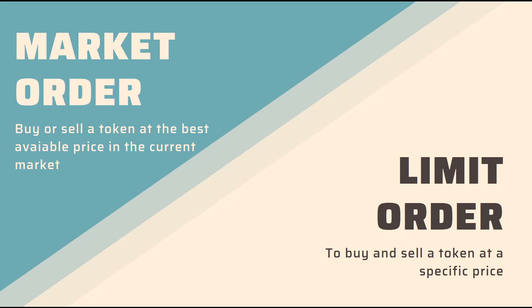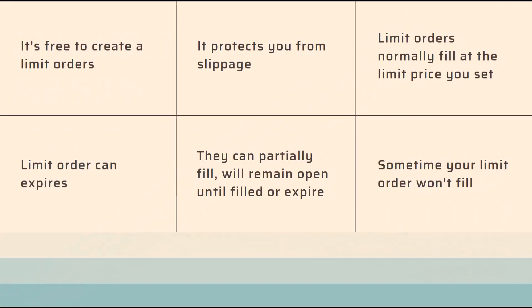With a limit order, you buy and sell a token at a specific price that you set, so if you want to get a deal, this is the way to do it. Some of the benefits: it's free to create a limit order, it protects you from slippage, and they normally fill at the limit price you set. They do expire — you can set them from 10 minutes up to seven days. They can also get partially filled, but your position will remain open until it's filled or expired.